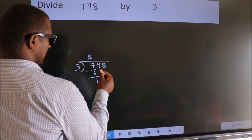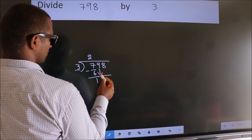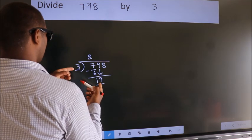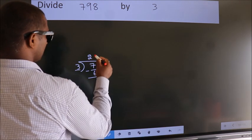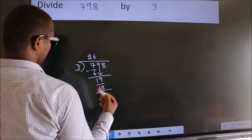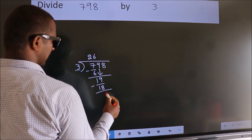After this, bring down the beside number. So 9 down, making 19. A number close to 19 in the 3 table is 3 times 6 equals 18. Now we subtract. We get 1.